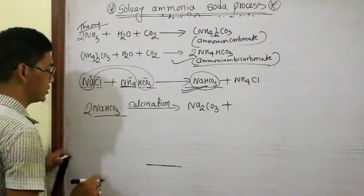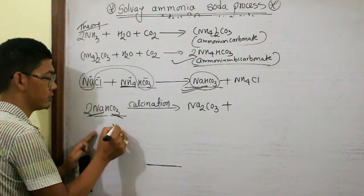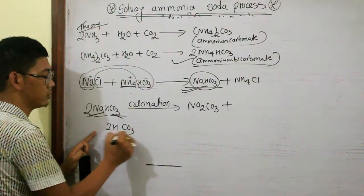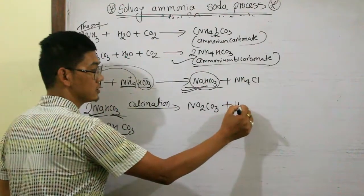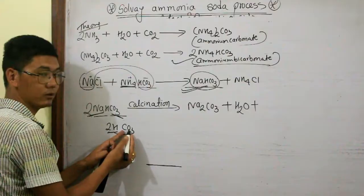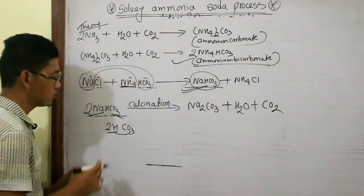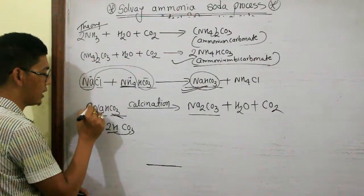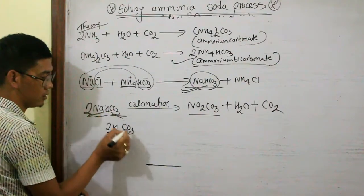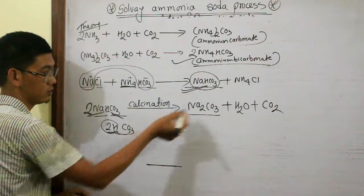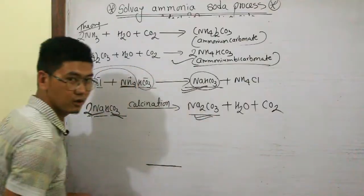Sodium bicarbonate (NaHCO3) upon heating: the CO3 group combines with 2 hydrogen and 2 oxygen. From the 3 oxygens in CO3 — 1 oxygen combines with 2 hydrogen to form water (H2O), and 2 oxygens combine with carbon to form CO2. So sodium bicarbonate gives sodium carbonate plus H2O plus CO2.